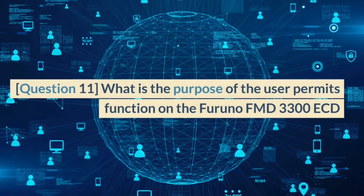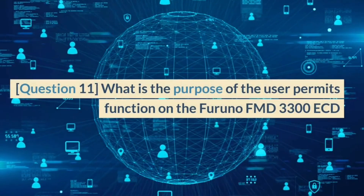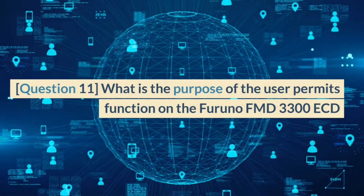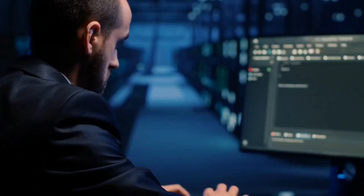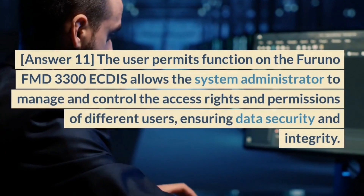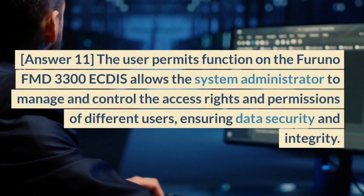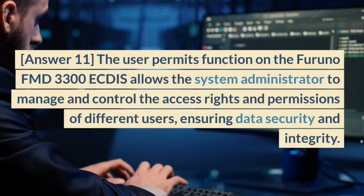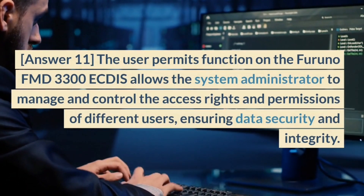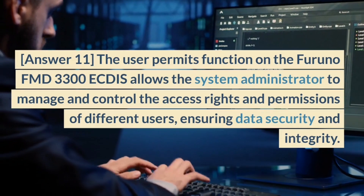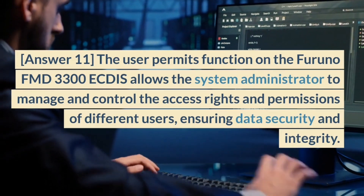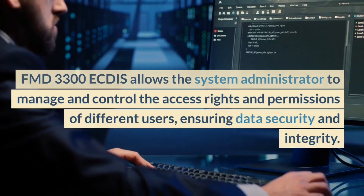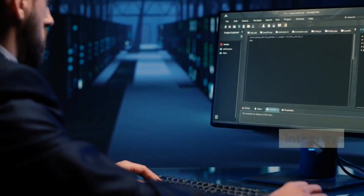Question 11. What is the purpose of the user permits function on the Furuno FMD 3300 ECDIS? Answer 11. The user permits function allows the system administrator to manage and control the access rights and permissions of different users, ensuring data security and integrity.